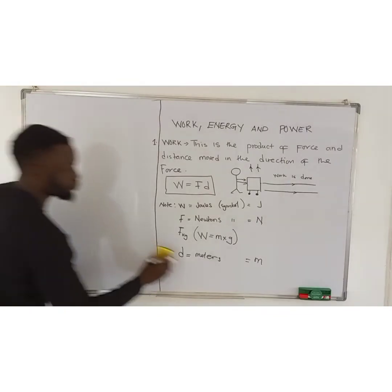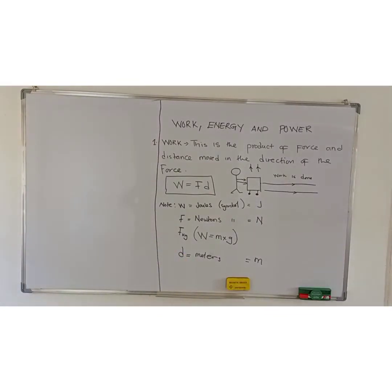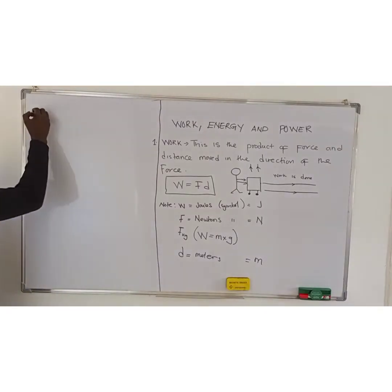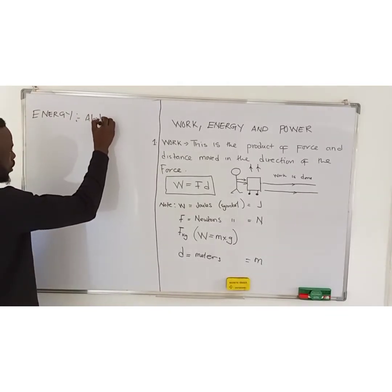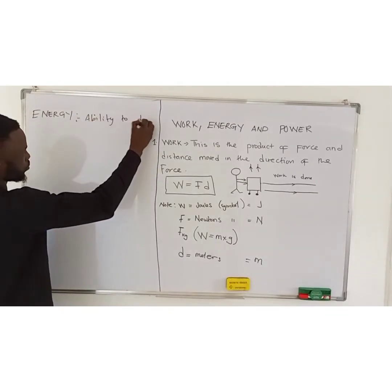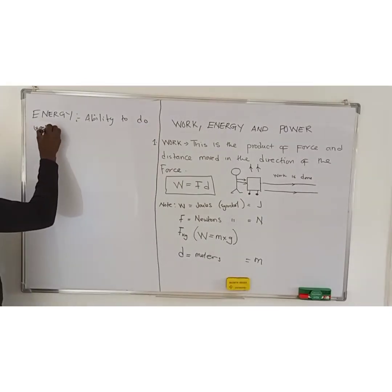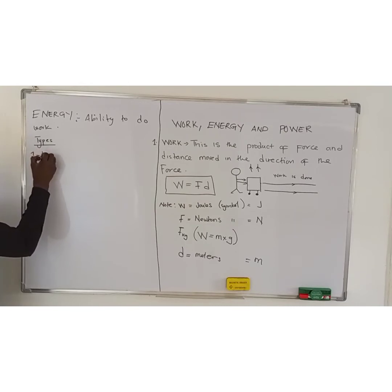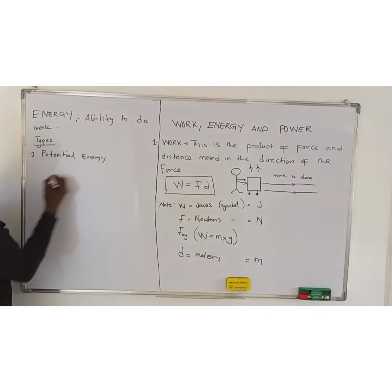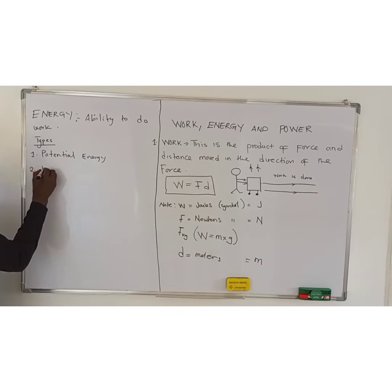Now we've got energy. Energy can be defined as the ability to do work. There are two types of energy. We've got, one, what we call potential energy, and two, what we call kinetic energy.